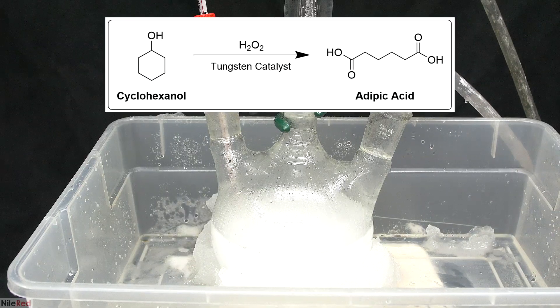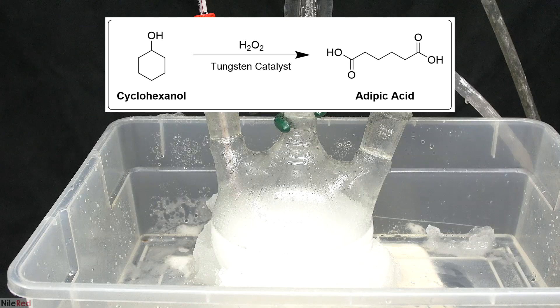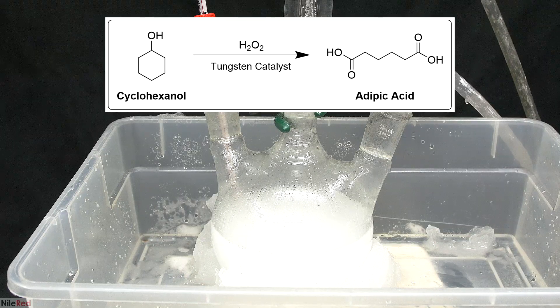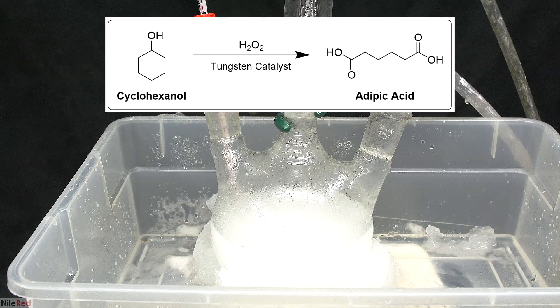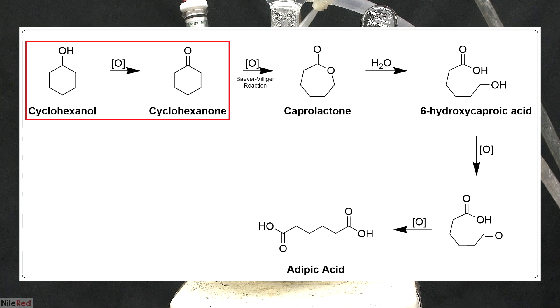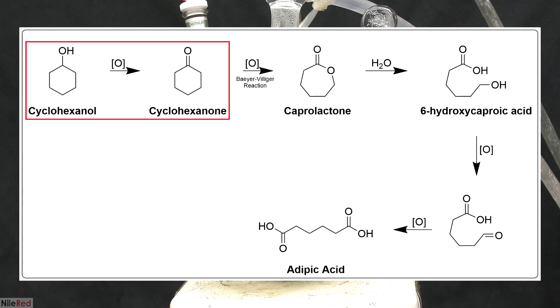This is the reaction that's supposed to be occurring. In the presence of the tungsten catalyst and hydrogen peroxide, the cyclohexanol is being oxidized to adipic acid. In terms of the mechanism, this is what was suggested by the authors of the paper. It starts with cyclohexanol, which is oxidized by peroxide to form cyclohexanone.